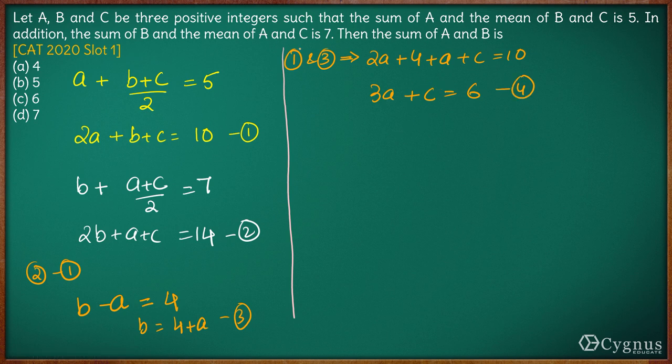Now it is given that a, b, c are positive integers. All of these are positive integers. For what positive values of a and c will this equation be true? Let us see.